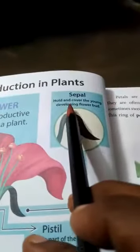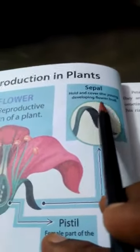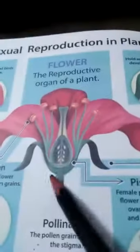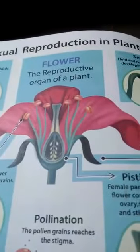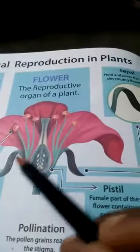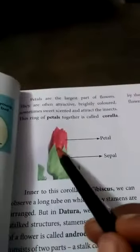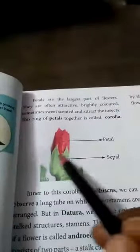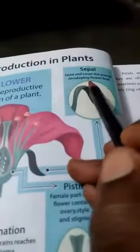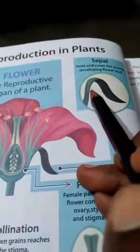Next is the sepal. The sepal holds and covers the young developing flower bud. This is the sepal — it holds and covers the developing flower bud.